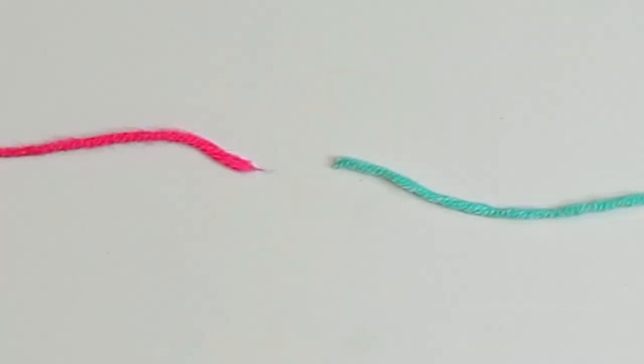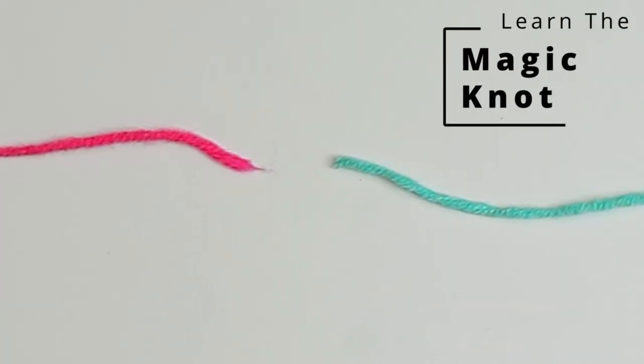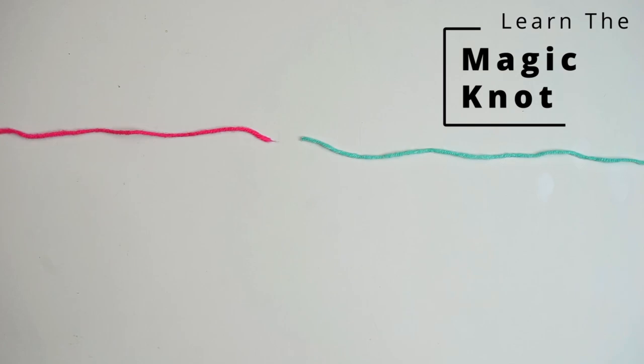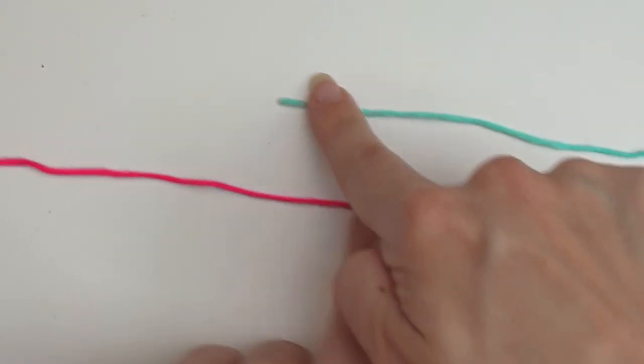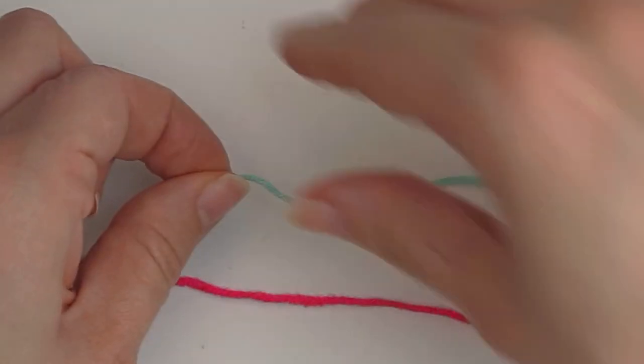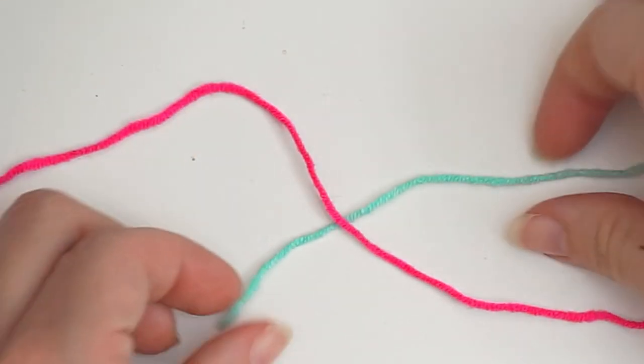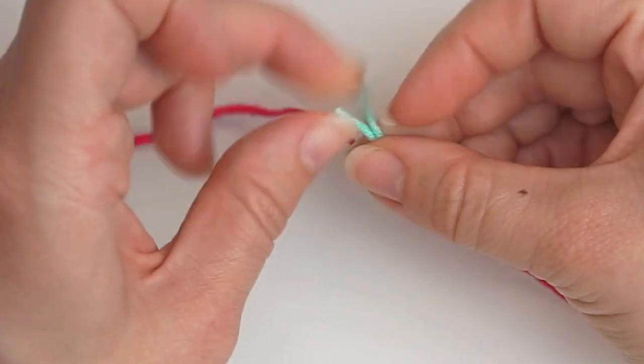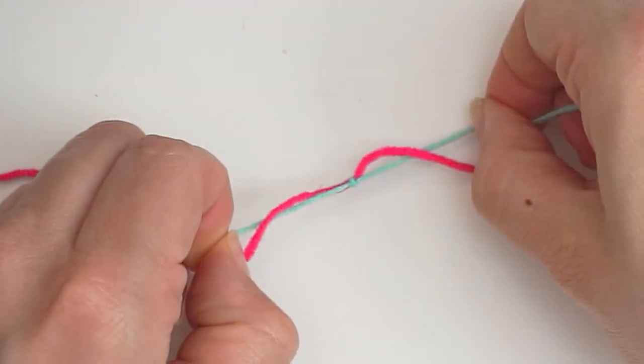If you run out of yarn in the middle of a project or you just want to join two colors, you can do the magic knot. Just do like this. Then you take the one end and tie a knot to the other. Just a simple knot.